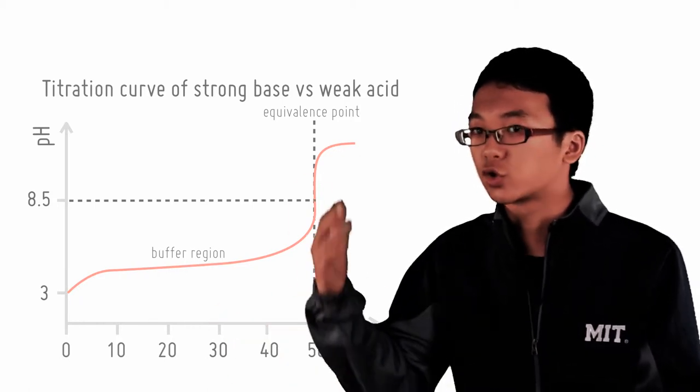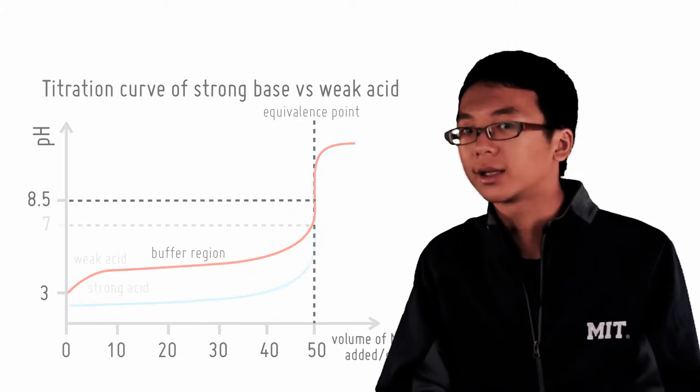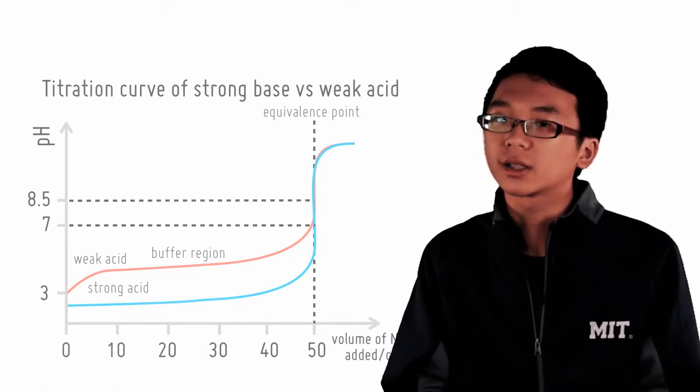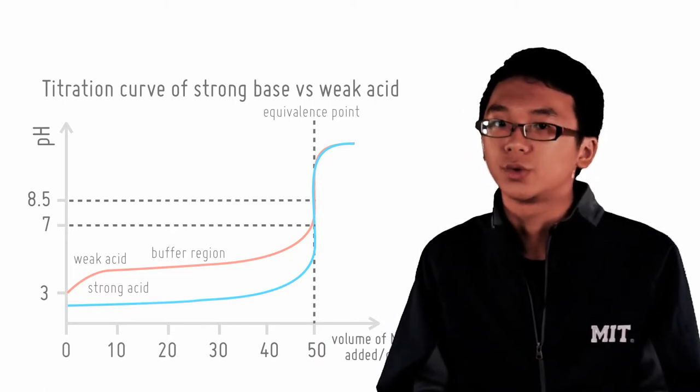If you swap the weak acid with a strong acid instead, the graph will look like this one. Again, there is no buffer. The pH starts out much lower, and the equivalence point pH is much closer to 7.